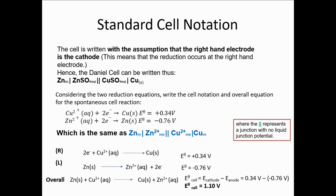If you were asked to calculate the expected overall cell potential, remember that the potentials given for these species are given as reduction potentials. When we try to reduce Cu²⁺ by adding two electrons to convert Cu²⁺ to Cu⁰, the potential is +0.34 volts. When we try to reduce Zn²⁺ by adding two electrons, we get a potential of −0.76 volts. These are the reduction potential values, because they are obtained when you try to reduce the metal ion to the solid metal.